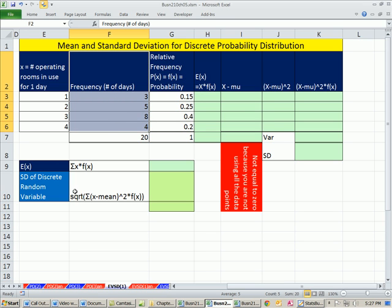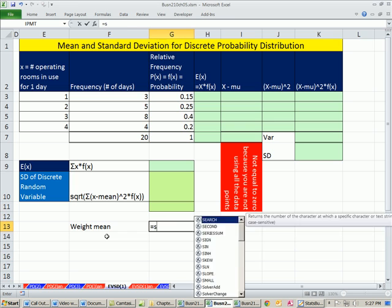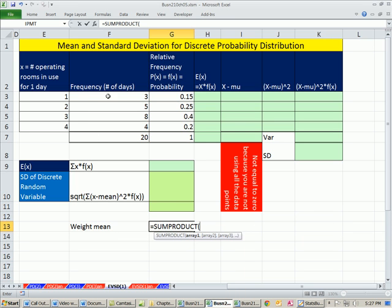We have x equals number of operating rooms in use for one day. We could have 1 to 4. This was from our example for over the last 20 days. This is what we get usually when we have a discrete probability distribution. We get our x value and our probabilities.